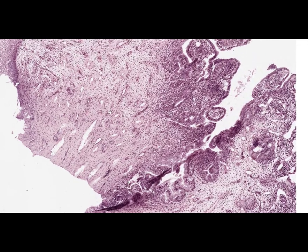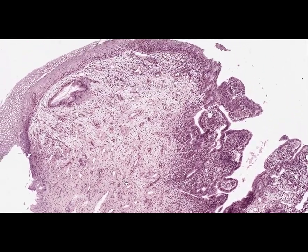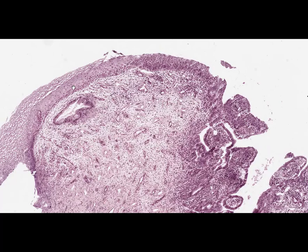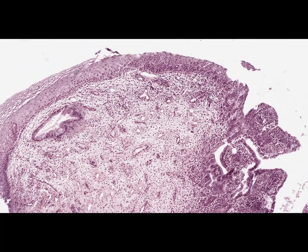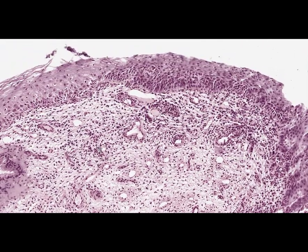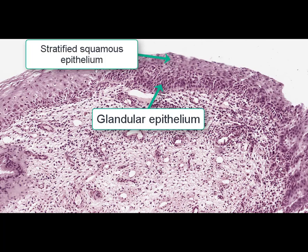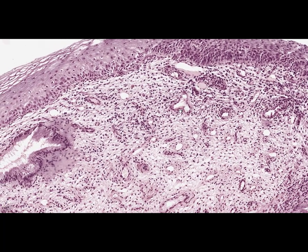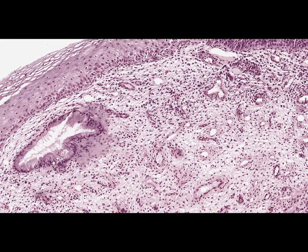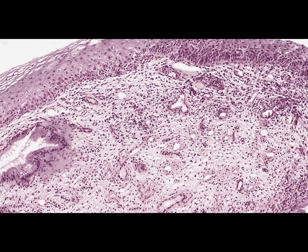At endocervicosis, the changes occur on the outer surface of the uterine cervix, where stratified epithelium is replaced by glandular epithelium. At higher magnification, changes in epithelial lining are found at the site of healing endocervicosis. Due to the healing process, the stratified epithelium grows over the healing site, while some glandular epithelium still remains under the growing new epithelial lining. Cystic expansion of glands, called nabothian cysts, is found in the submucous layer, which is typical for the healing stage.